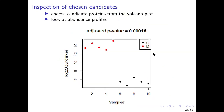If you now have a list of promising biomarker candidates, it is advisable to have a look at them — for example, by looking at abundance profiles. Here you can see how big the difference between the two groups is and if there are maybe any outliers in one of the groups.